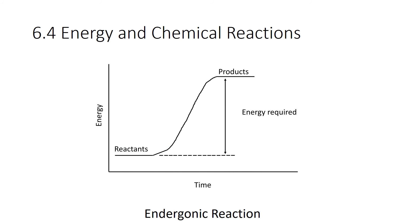Here's the graph showing the energy required for an endergonic reaction. The reactants, carbon dioxide and water, have much stronger bonds than the products, glucose and oxygen. To make this reaction happen, it takes a large input of energy to break the bonds of carbon dioxide and water, and far less energy is released when glucose and oxygen are formed.